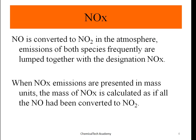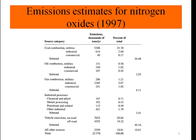Nitric oxide NO is converted to NO2 in the atmosphere. Emissions of both species are frequently lumped together under the designation NOx. When NOx emissions are presented in mass units, the mass is calculated as if all the NO had been converted to NO2, because NO is a very unstable compound and will finally convert to NO2.